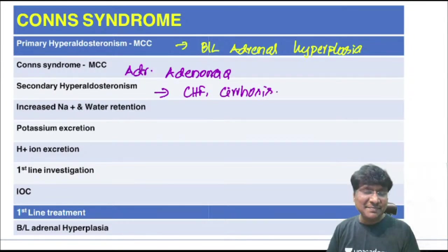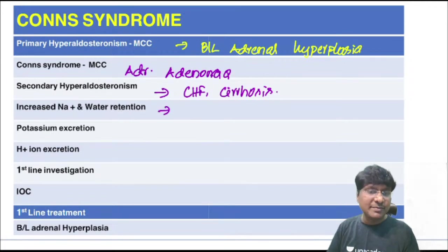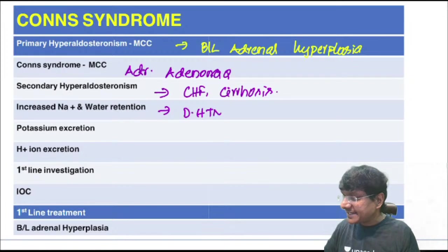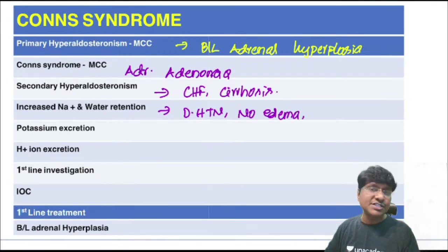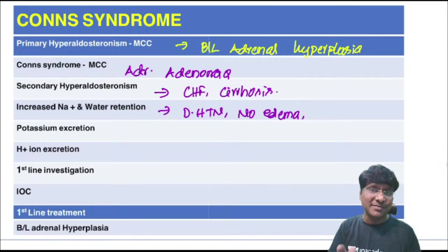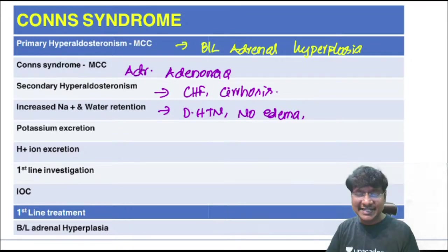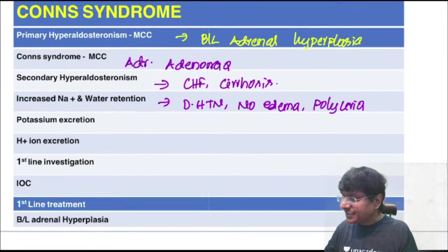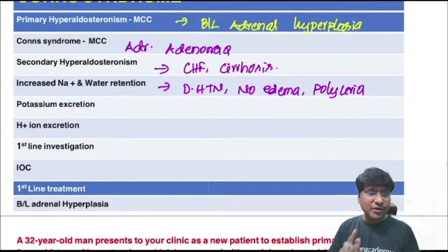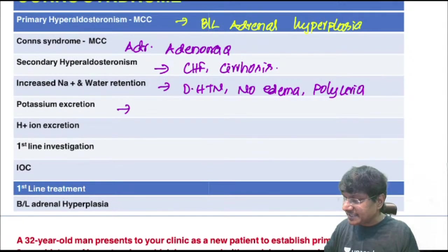In hyperaldosteronism, increased sodium and water retention causes diastolic hypertension. Importantly, there is NO edema due to aldosterone escape phenomenon, which also causes polyuria. Potassium excretion leads to hypokalemia, causing muscle weakness and ventricular arrhythmias.